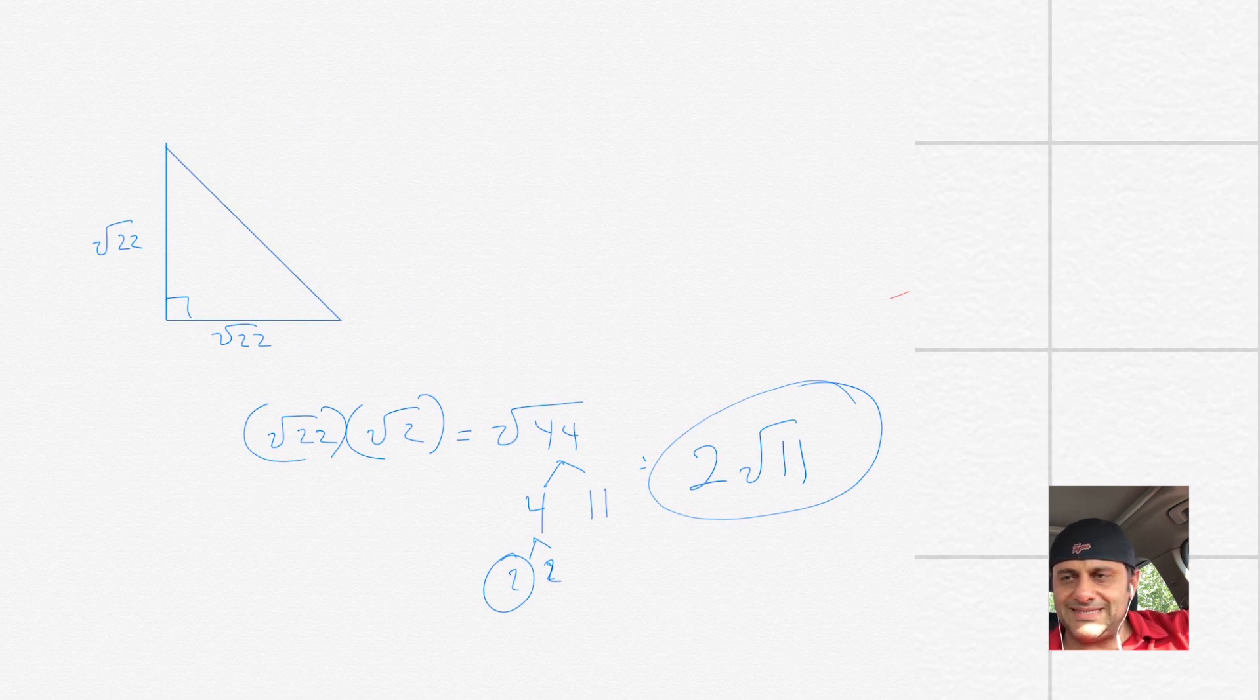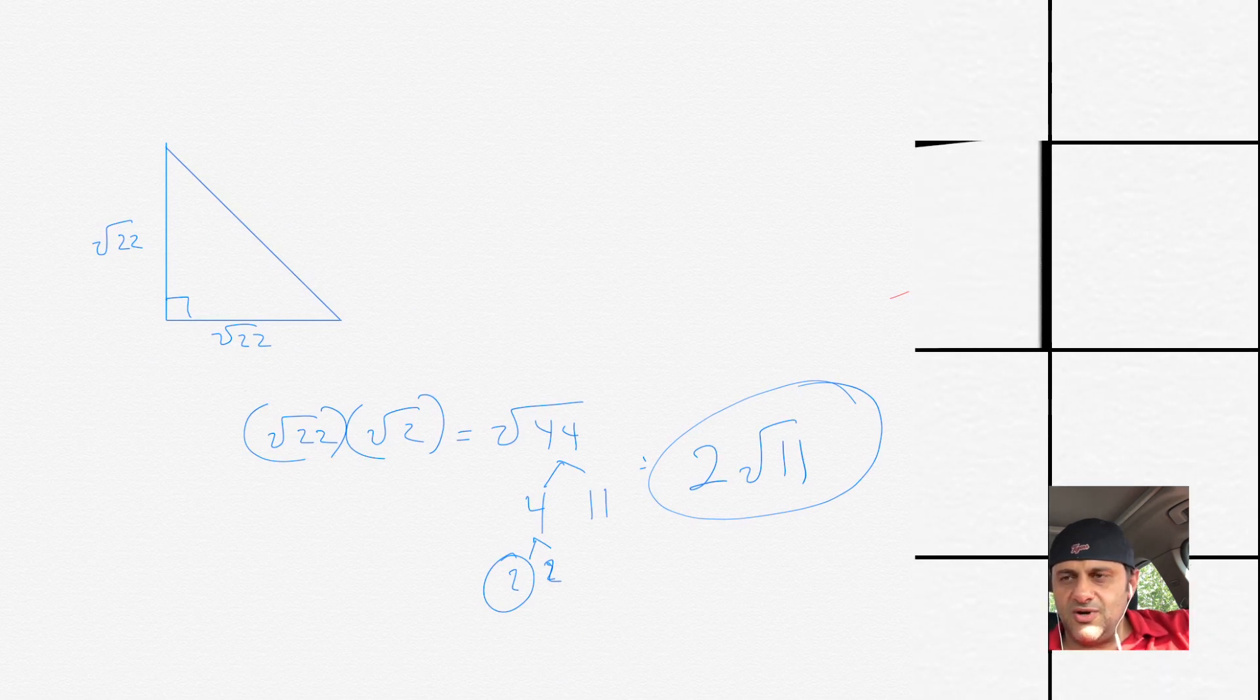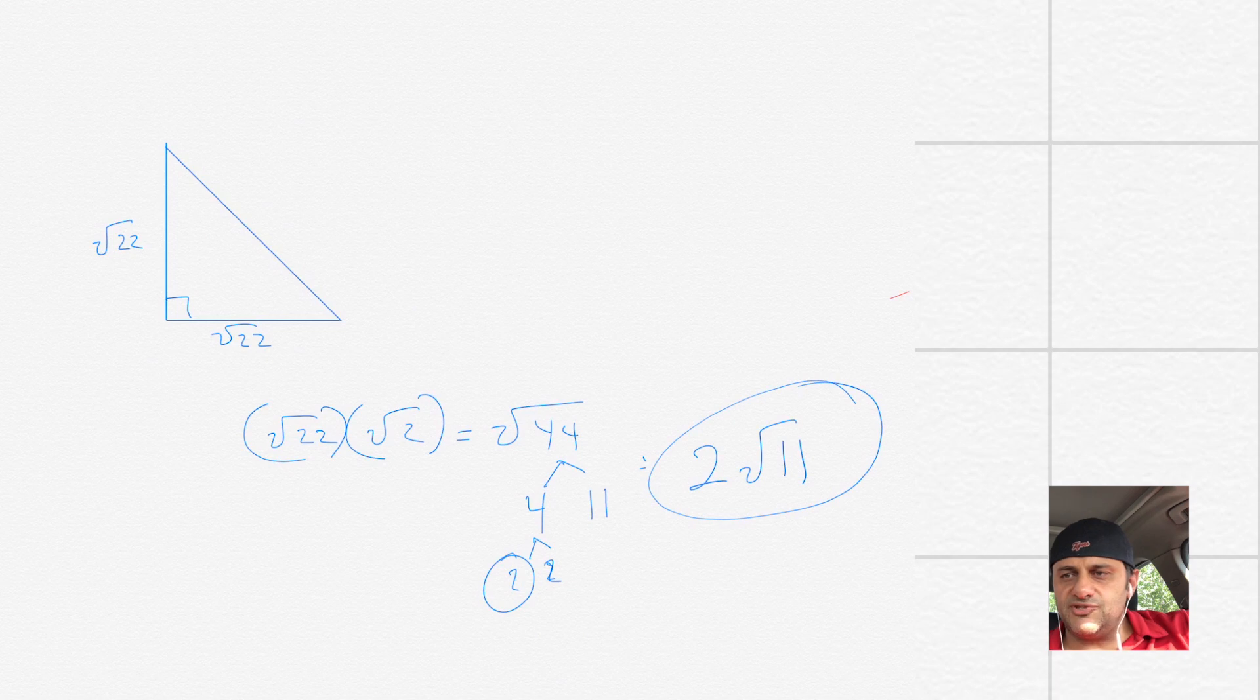Now, remember, the 2 times the square root of 11, that's the same value as the square root of 44. It's just a simplified version of it. All right, good stuff. My recommendation is do these square root problems. Keep practicing them. They are very important.